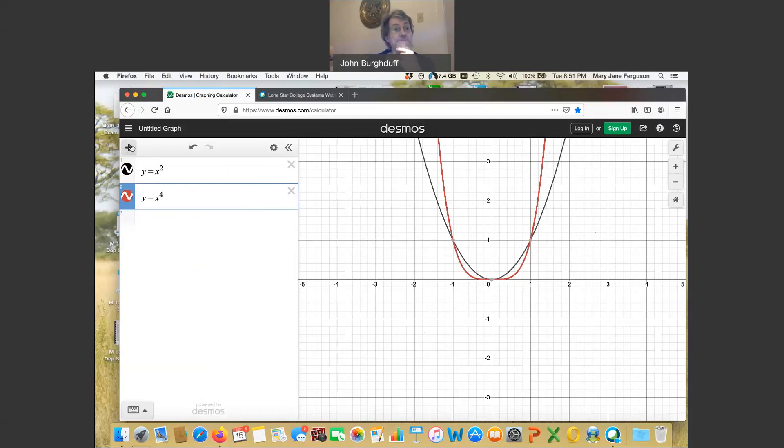Let's look at a couple more here and see what happens. Let's say we have y equal x to the sixth. Notice that pattern continues. Let's go one more. y equal x to the eighth. Even more so. Flatter and flatter and flatter as you approach the origin. Steeper and steeper as you move away from the origin. But no matter what, always these points. Isn't that interesting?